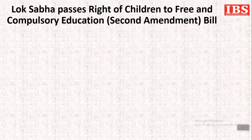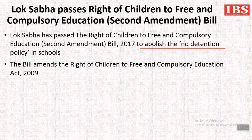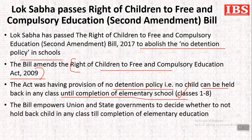First, we will talk about the Right of Children to Free and Compulsory Education 2nd Amendment Bill that was recently passed by Lok Sabha. The main aim is to abolish the no-detention policy in school. The bill amends the Right of Children to Free and Compulsory Education Act 2009. This bill had a provision of no-detention policy — that is, no child can be held back in any class until the completion of elementary school, i.e., from classes 1 to 8. This bill has now given the power to the union and state governments to decide whether to hold back a child in any class until the completion of elementary education.